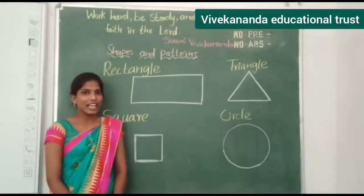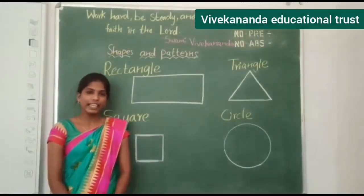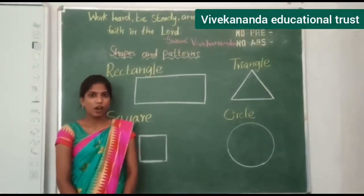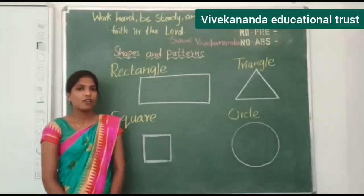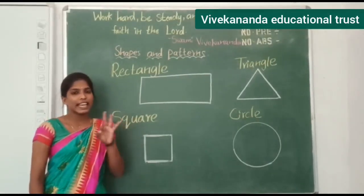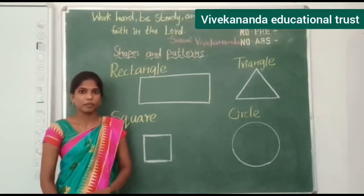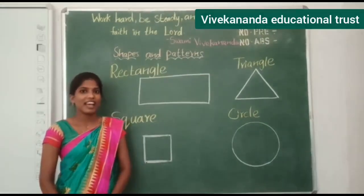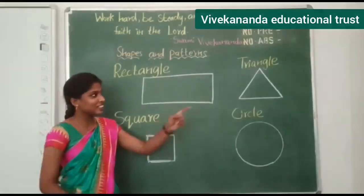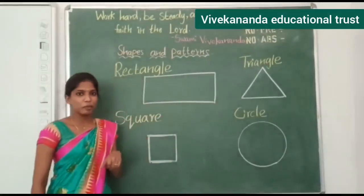Now I will ask questions to you — think and say the answer. Which shape has three sides and three corners? Triangle. Super children.